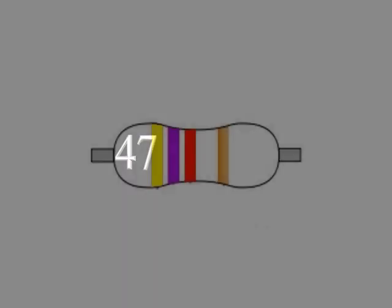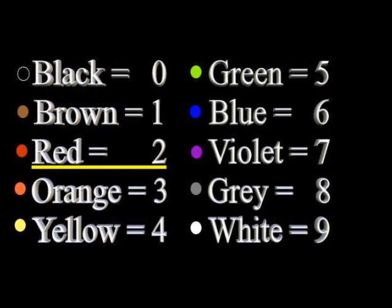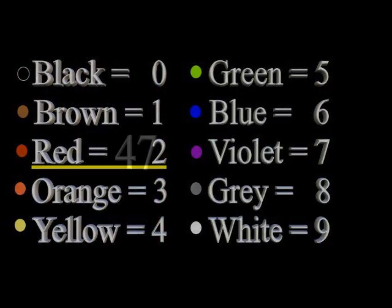The third color band, in this case red, is called the multiplier. It tells us how many zeros we add to the first two numbers. Red represents two, we need two zeros. The value of this resistor is 4,700 ohms.